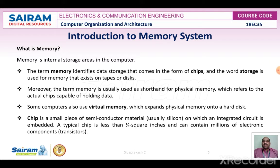A chip is a small piece of semiconductor material — usually silicon — on which an integrated circuit is embedded. A typical chip is less than a quarter of a square inch and can contain millions of electronic components like resistors, diodes, and transistors. Transistor-based chips are predominantly what make up memory chips.